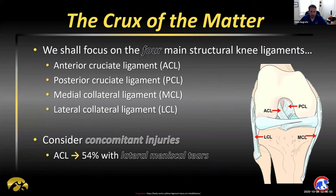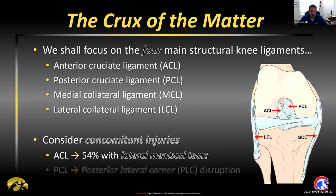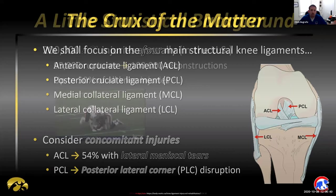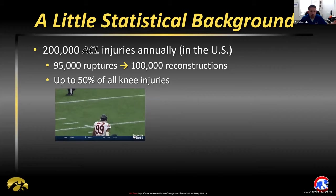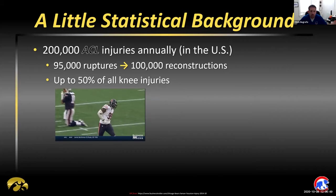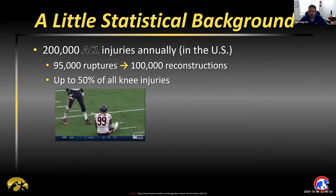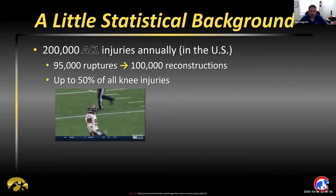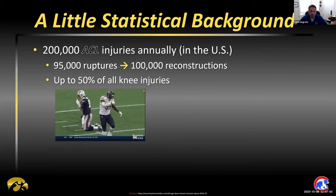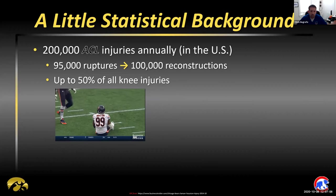In particular, the ACL more than half of the time is accompanied by a lateral meniscal tear. I tried to give a representation of the most common percentages and likelihoods. With regard to ACLs, it's thought to be about 200,000 ACL injuries annually in the U.S., with about half being ruptures and half being reconstructed annually. This is thought to be up to 50% of all knee injuries — shown here is Lamar Houston celebrating his sack and tearing his ACL in the process. Remember: humility, kids.